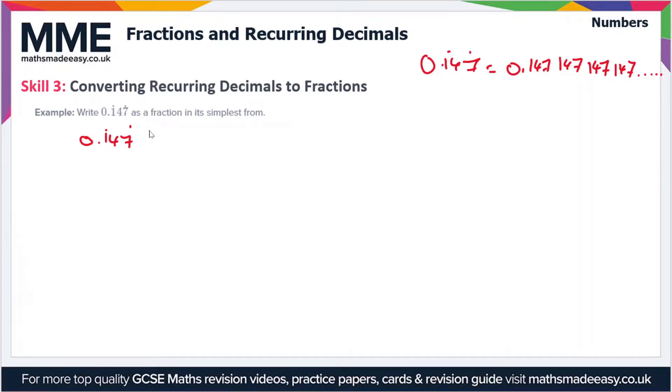The first thing we're going to do in order to make this into a fraction is set it equal to x. So we're setting up an algebraic expression here. What we can do is multiply this expression by 1000 so that we have 147.147, and that's going to be equal to 1000x.